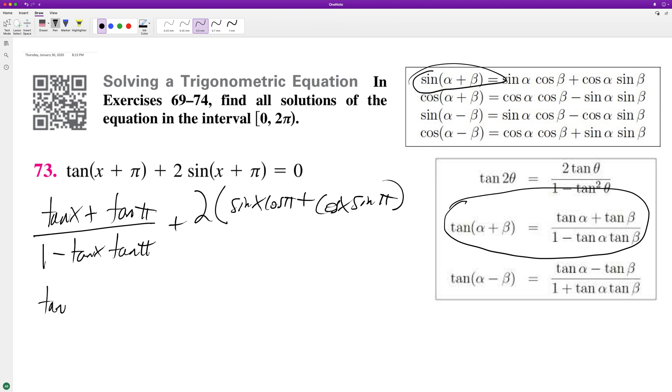So this is tangent of x plus tangent of π is equal to 0 over 1 minus tangent of x times 0. And then this becomes 2, or plus 2 times cosine of π is equal to negative 1, so this is negative sine of x. Sine of π is 0, so this becomes cosine of x times 0.